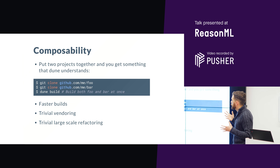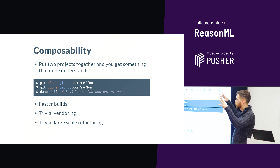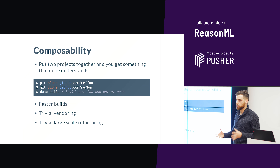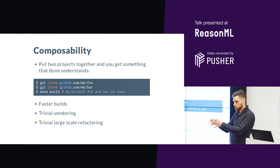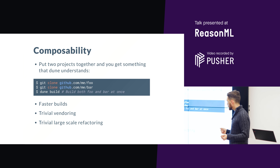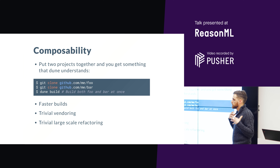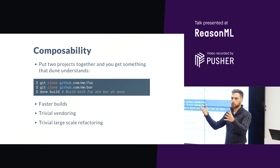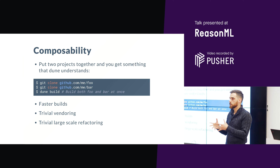What does composability give you? First, because Dune has a global view of the whole code, it can provide much faster builds — you don't just go through every single package one by one with parallelism inside each. You compile everything at once and get the maximum parallelism possible. It also makes vendoring extremely easy: just copy the source of your dependency inside your tree and it becomes part of your project.